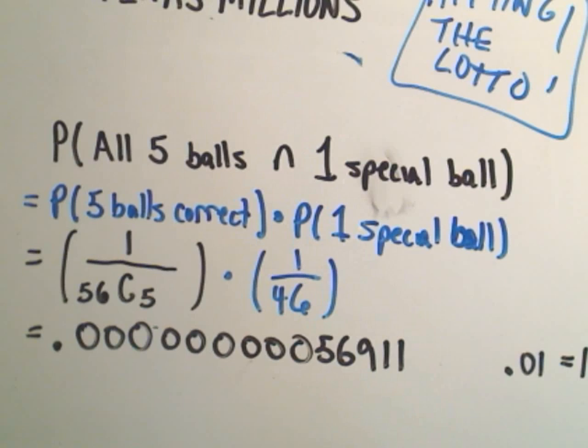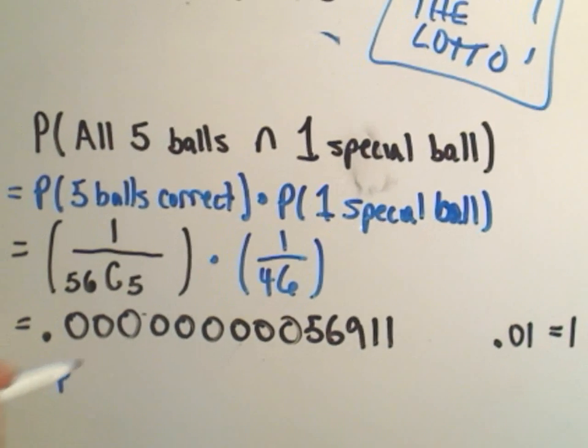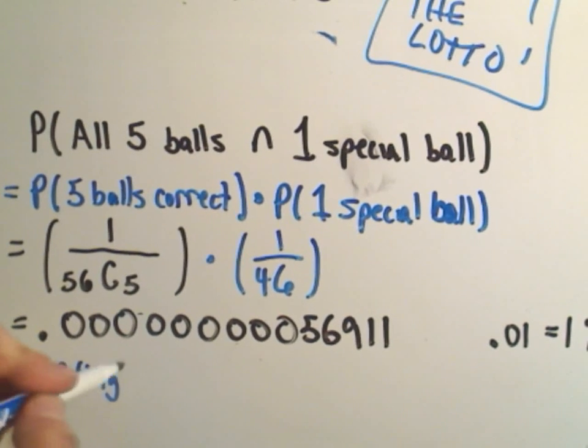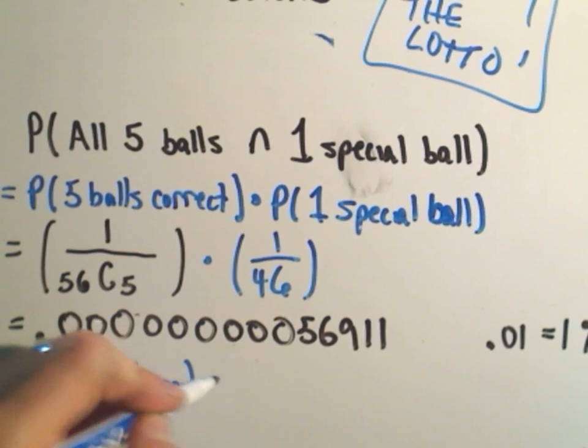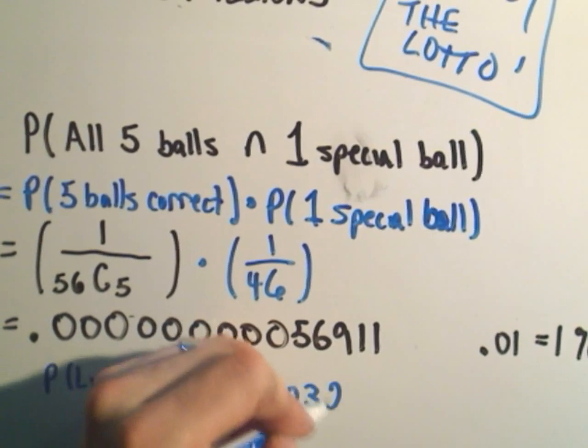.01 is a 1% probability that you win the Texas lottery. So, that's the probability of you winning the lottery if you buy exactly one ticket here in Texas. Just for a little reference, the probability of you getting struck by lightning if you live in the USA,